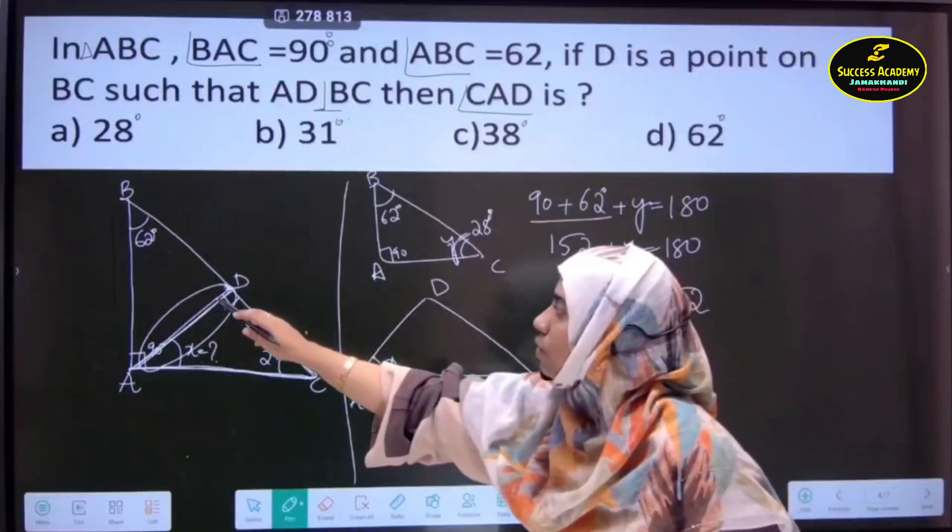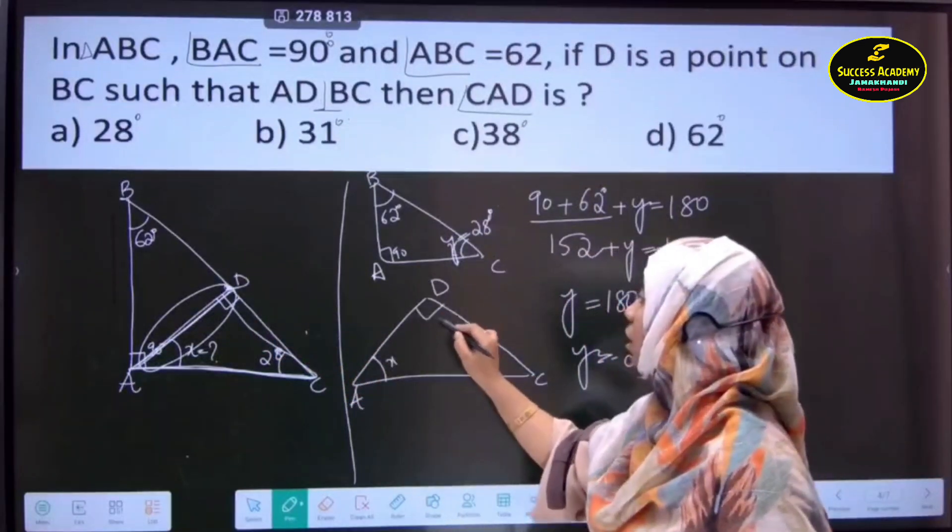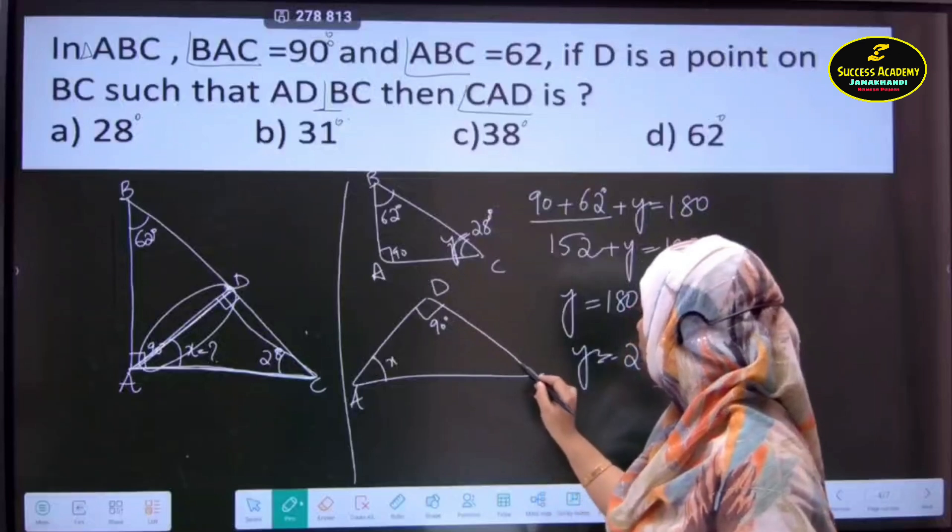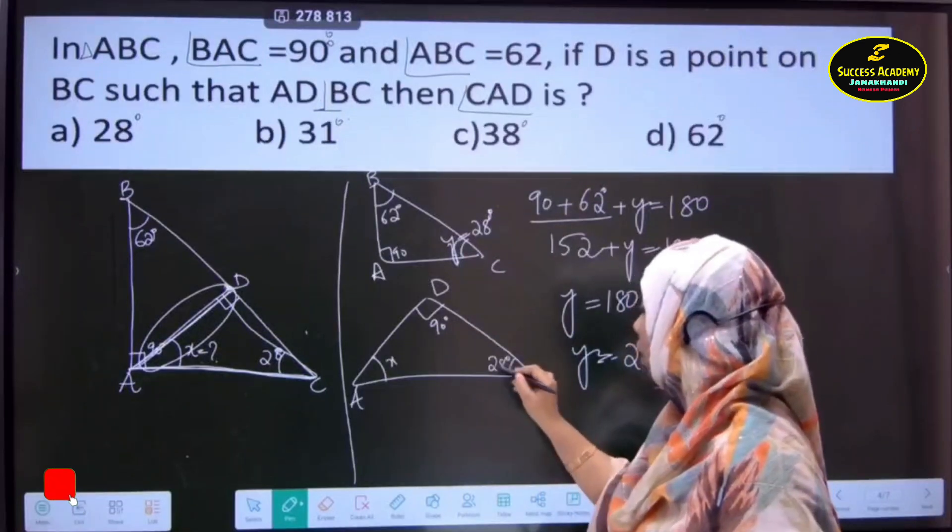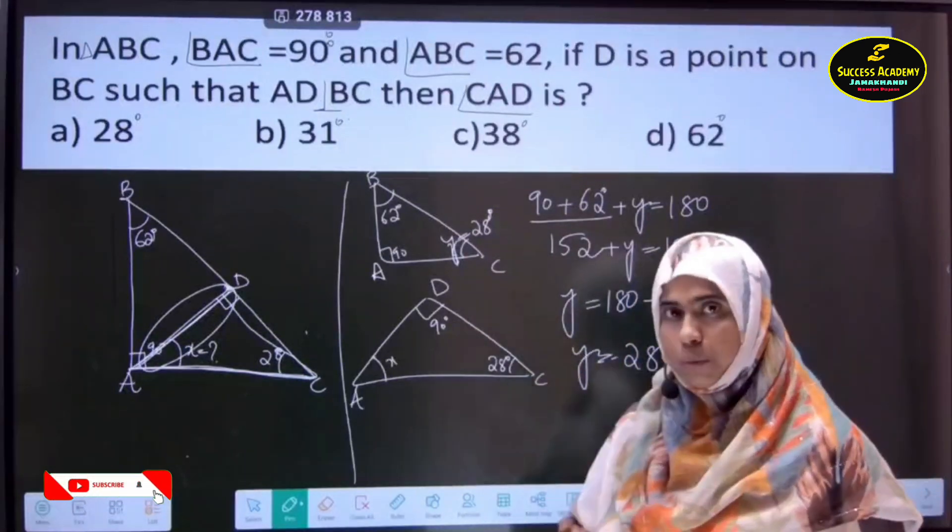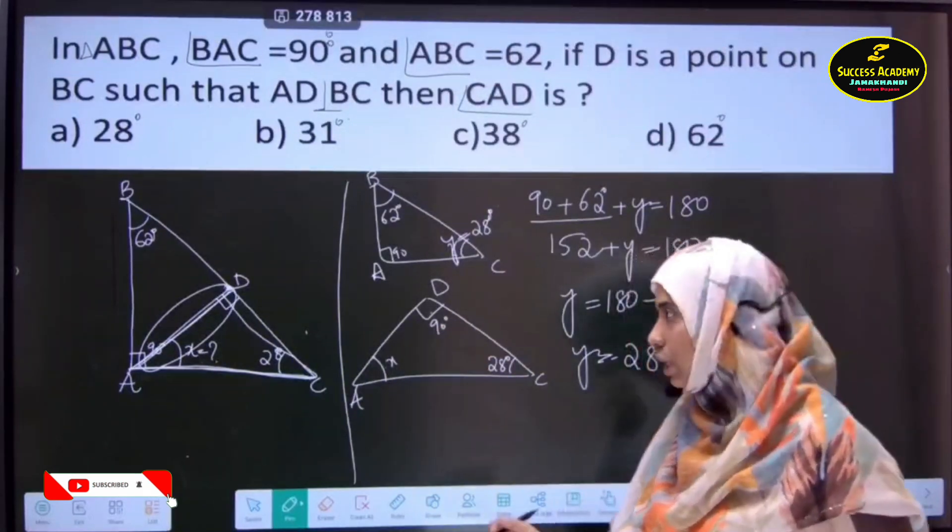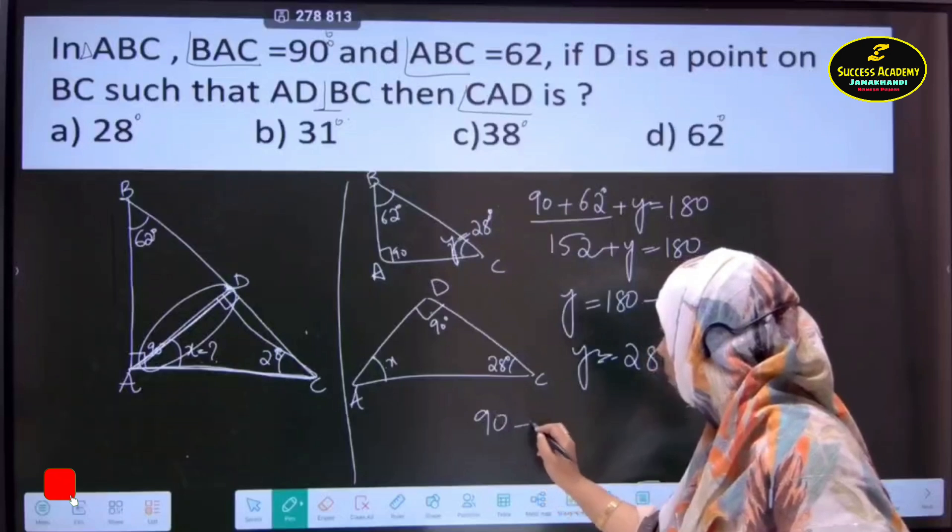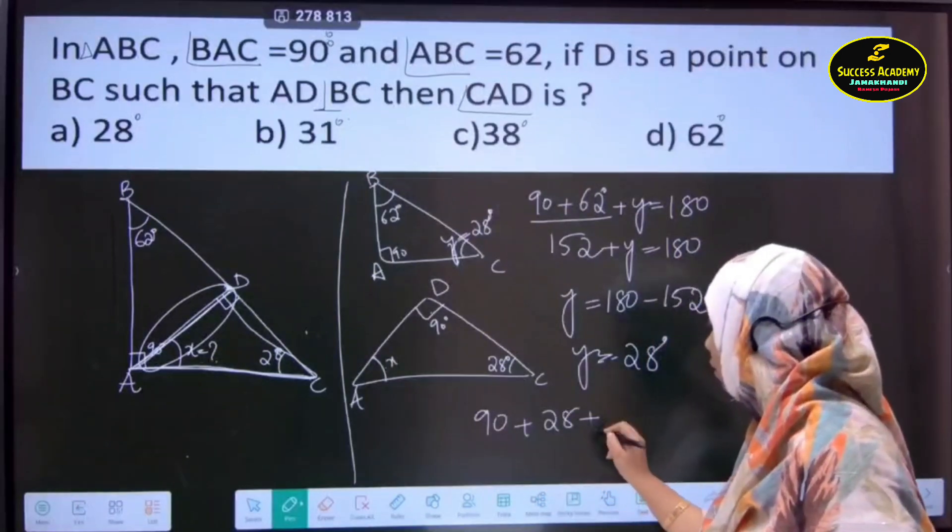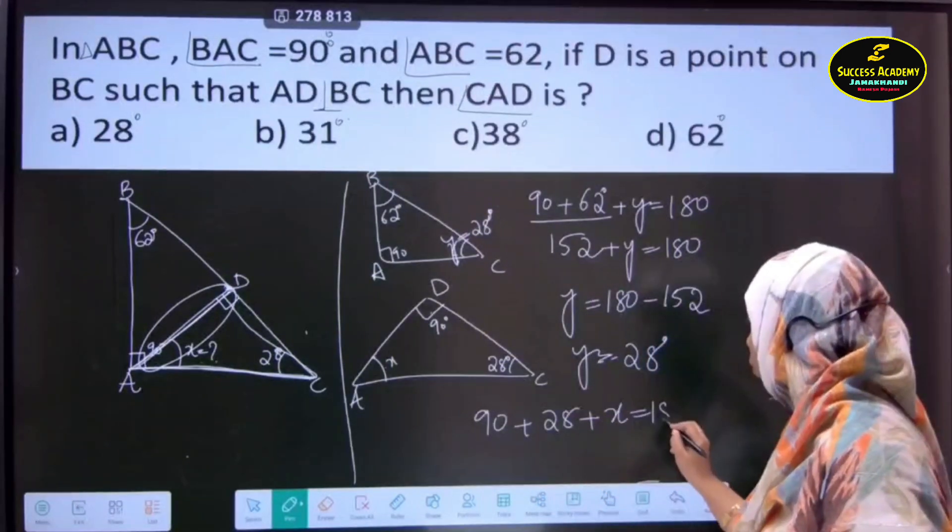And, see this which triangle is it? 90 degrees. And, this one is? 28 degrees. Again, we'll use the same property. Total of these three will be gives us 180 degrees. Hence, 90 plus 28 plus X will be equal to 180.